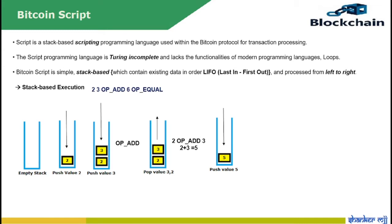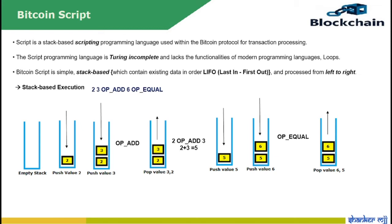Then the number 6 is pushed onto the stack, resulting in a total of 2 items in the stack. With the number 6 being above 5 in the stack, the next item in the script is OP_EQUAL, which pops the numbers 6 and 5 from the stack, compares them to check if they are equal, and pushes the result false back onto the stack because 5 is not equal to 6. The net result is that only the item false will be left in the stack.